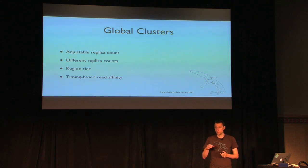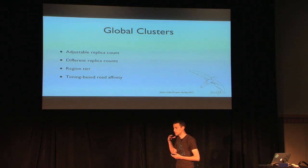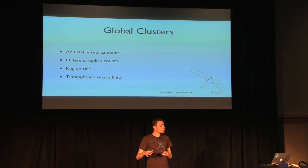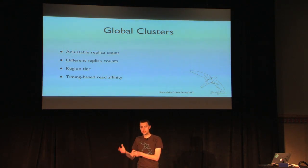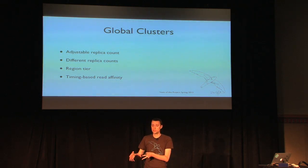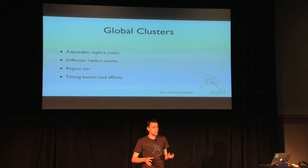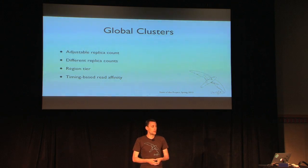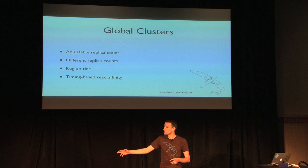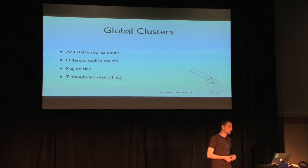The next prominent piece in building global clusters is the ability to support a region tier when Swift is deploying and scheduling where your data lives. In Swift, data is placed as uniquely as possible — spread across different drives, then different servers, then grouped into availability zones. Now those availability zones can be grouped into different regions. With four replicas and two regions with two zones each, you end up having a replica in each of those zones spread evenly across that region tier.